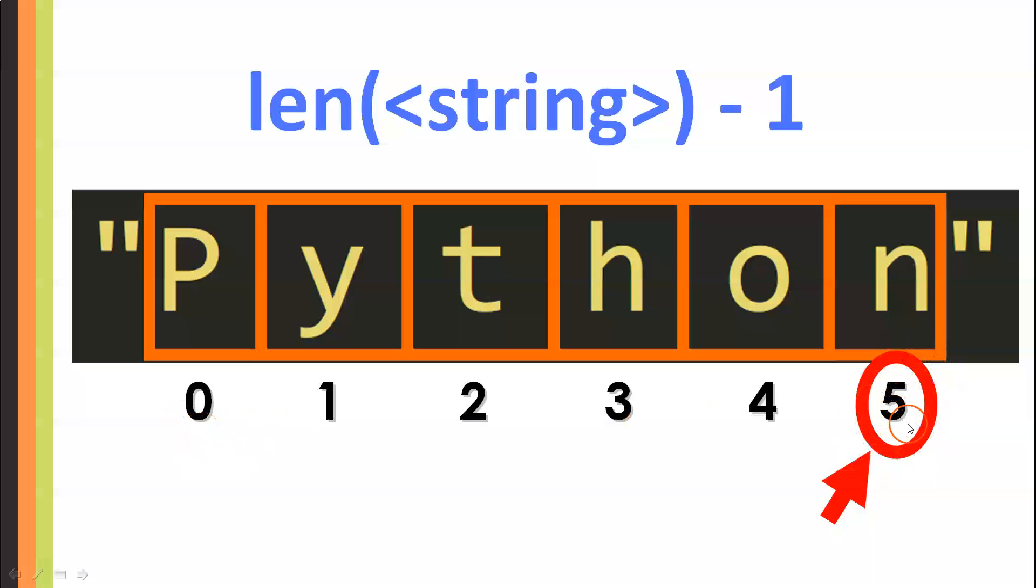So, you will always find that the last index of the string is the length of the string, how many characters it has, minus 1. In this case, the value of the length of the string is 6, and we are subtracting 1 from that value, so we get the final index 5, right here.